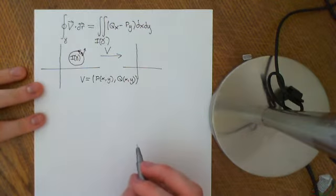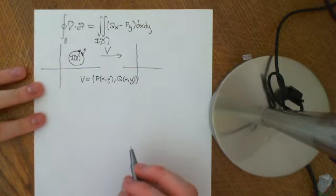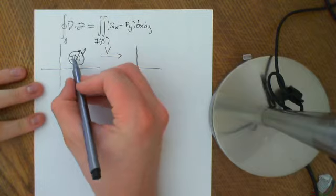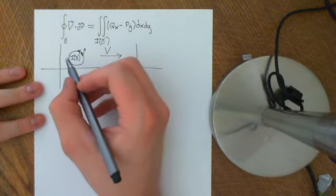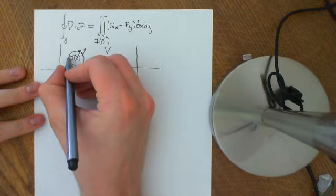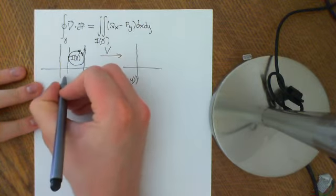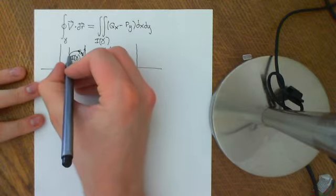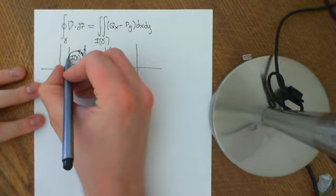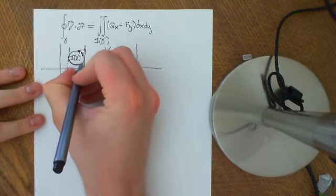So far we've shown that this is true if this gamma has some very heavy restrictions placed on it. You have to be able to divide it effectively. It has to have its endpoints, we'll call those A and B, and gamma has to take the form of two curves effectively...